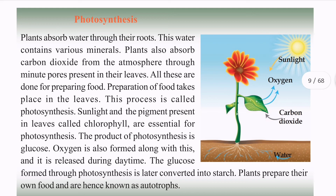Photosynthesis will be done — preparing food in the leaves. The process is photosynthesis. Sunlight and chlorophyll are required. Chlorophyll is the pigment present in the leaves.